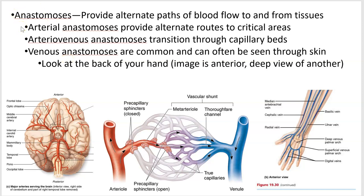This is about a structure called anastomosis — singular is anastomosis, so the -es is your classic plural ending. Anastomoses are circulation patterns that allow alternate paths of blood flow. This is what's called an arteriovenous anastomosis because it goes from an artery to a vein — just multiple routes through the same or to the same goal.